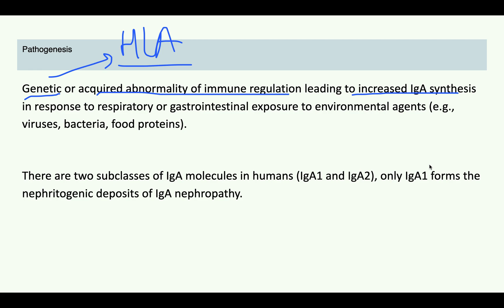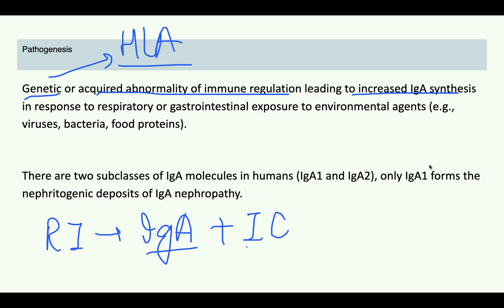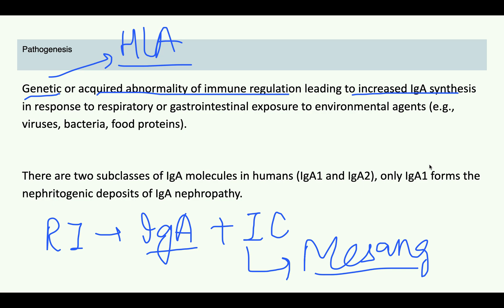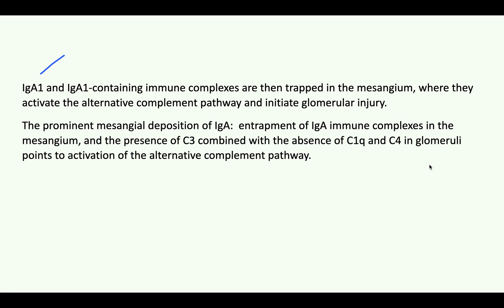After any infection the patient has increased IgA synthesis. This IgA, along with immune complexes containing IgA formed in the body, will go and get deposited in the mesangium of the glomerulus. When deposited in the mesangium, it leads to alternative complement pathway activation and causes damage to the glomerulus. It is also noted there are two subclasses of IgA: IgA1 and IgA2. However, only IgA1 is nephrotogenic and is seen in the mesangium. IgA1 and IgA1-containing immune complexes get trapped in the mesangium, activate the alternative complement pathway, and lead to glomerular injury.